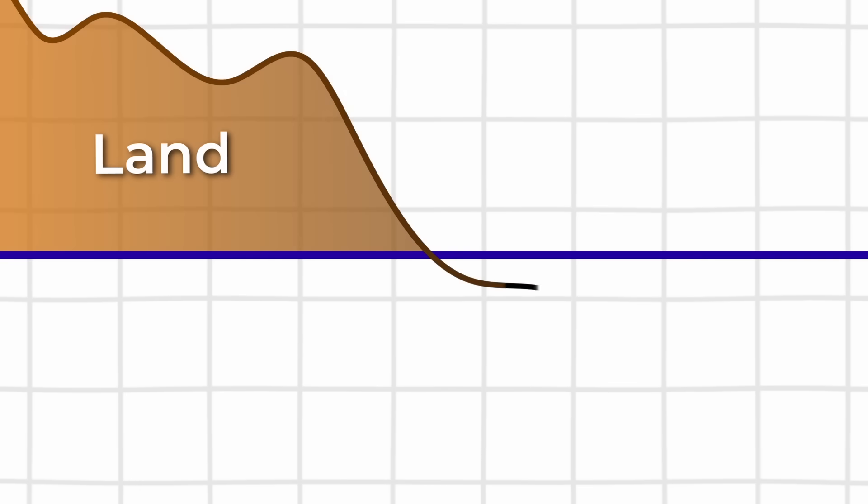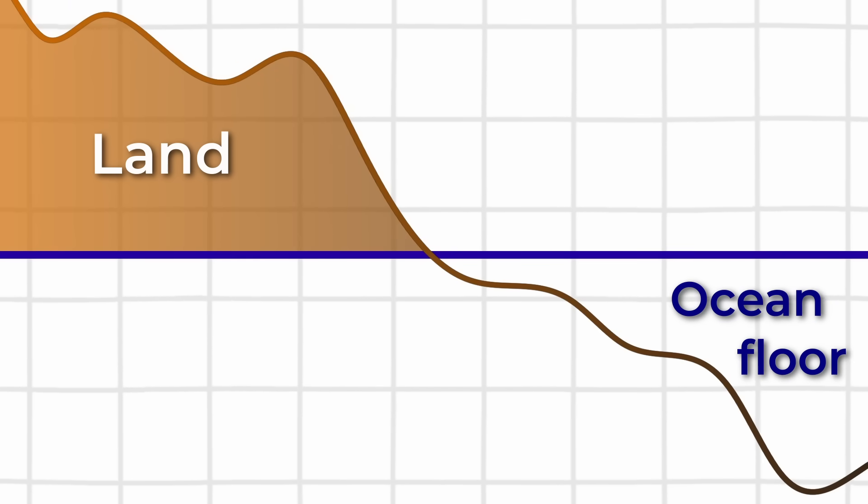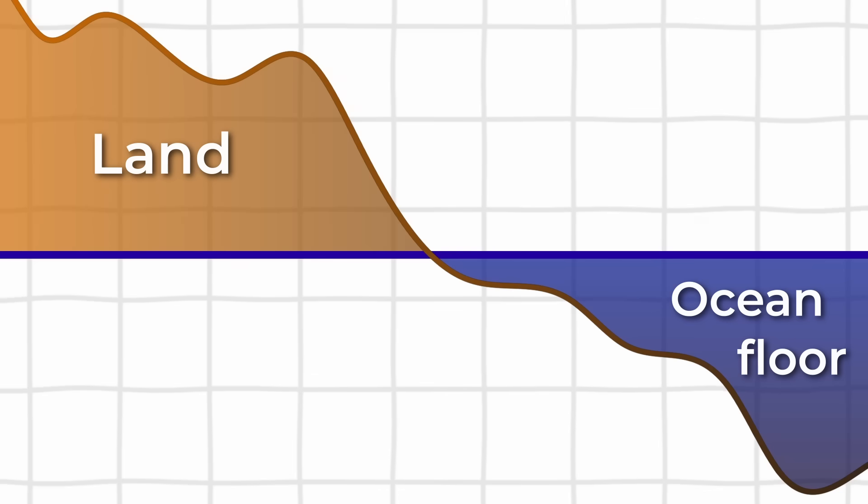This is the sea level. Whatever is above the line we usually call land, and whatever is below it we call the sea or ocean floor, which, of course, is covered with water.